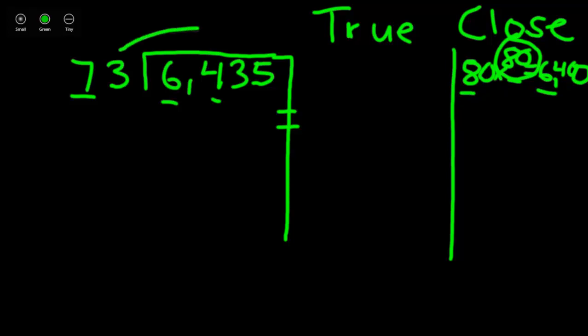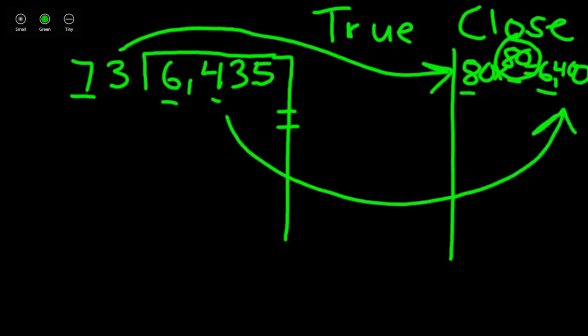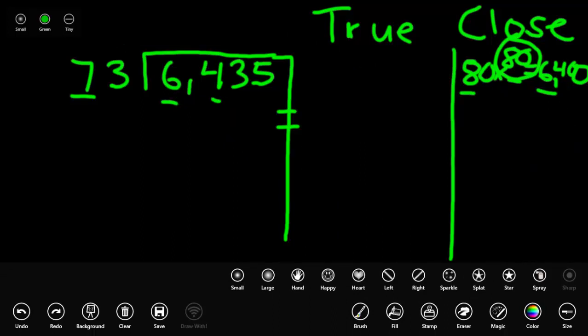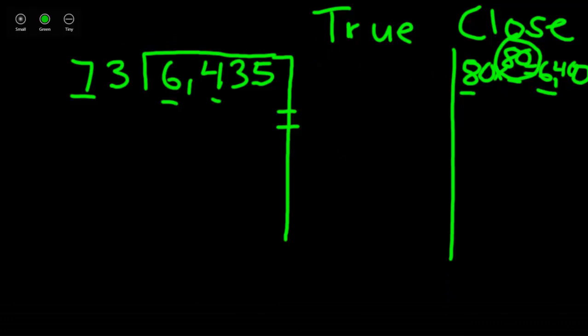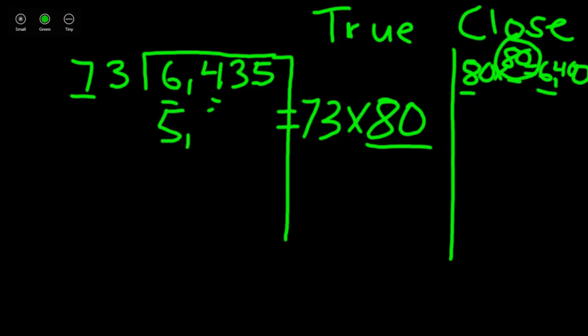Now remember, when we answered, we got this 80 from our 73. We got our 6,400 from our 6,435 as our dividend. Now the 80 that we found is what we're actually going to use. So let's make that true. 73 times 80. Well what is 73 times 80? It's 5,840. You could use longhand math to find that out by using partial products, or if you have a calculator you could also use a calculator.